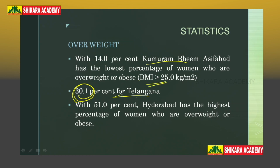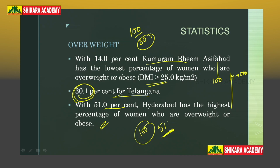With 14.1 percent, Kumram Bheem Asifabad has the lowest percentage of women who are overweight or obese (BMI above 25). With 51 percent, Hyderabad has the highest percentage — meaning 51 out of 100 women in Hyderabad are either overweight or obese, compared to the state average of 30.1 percent.